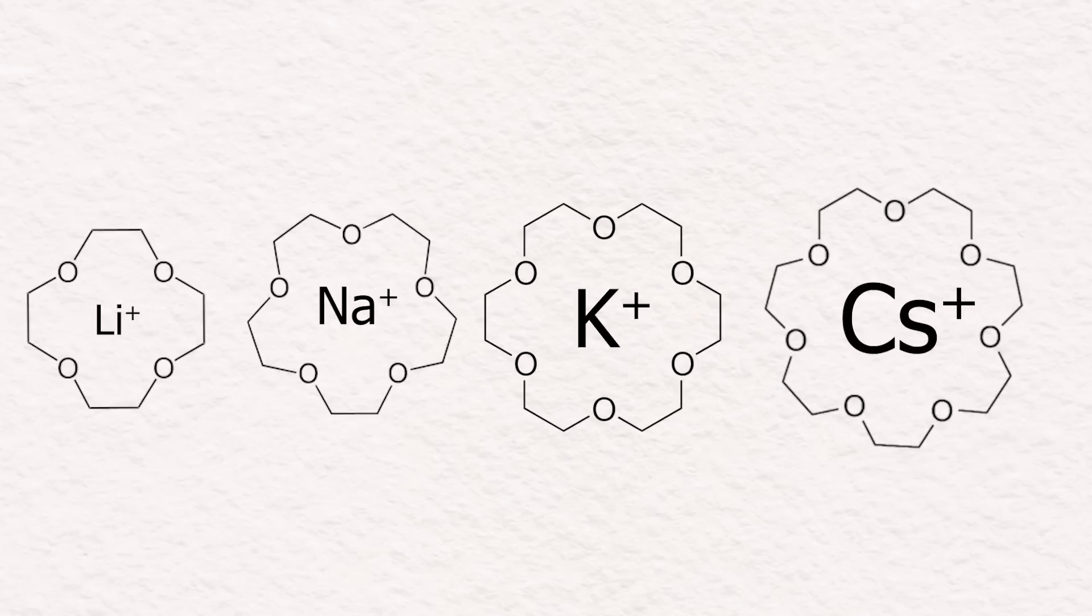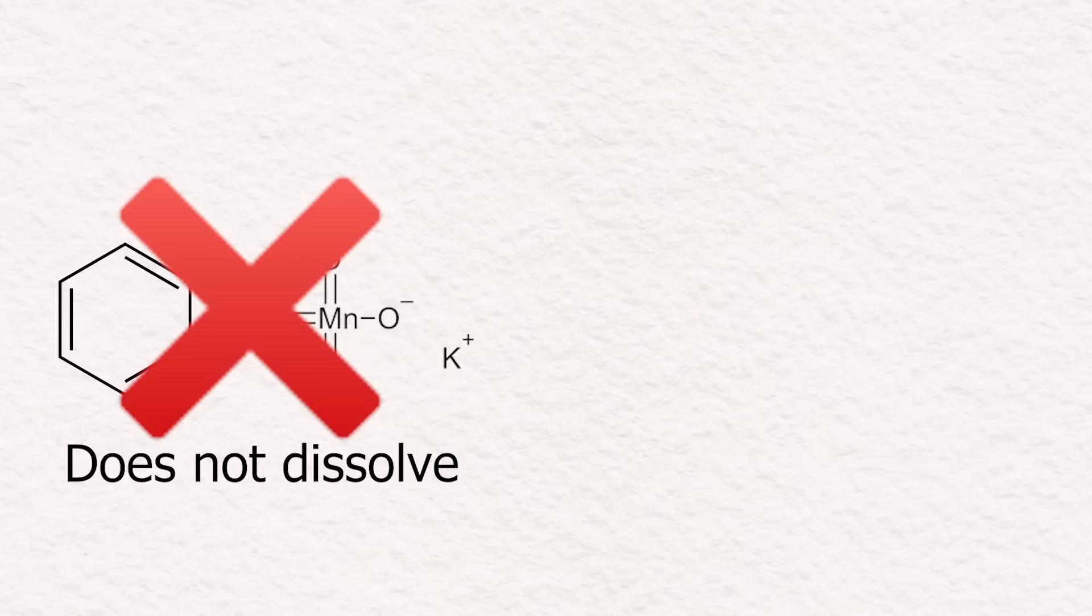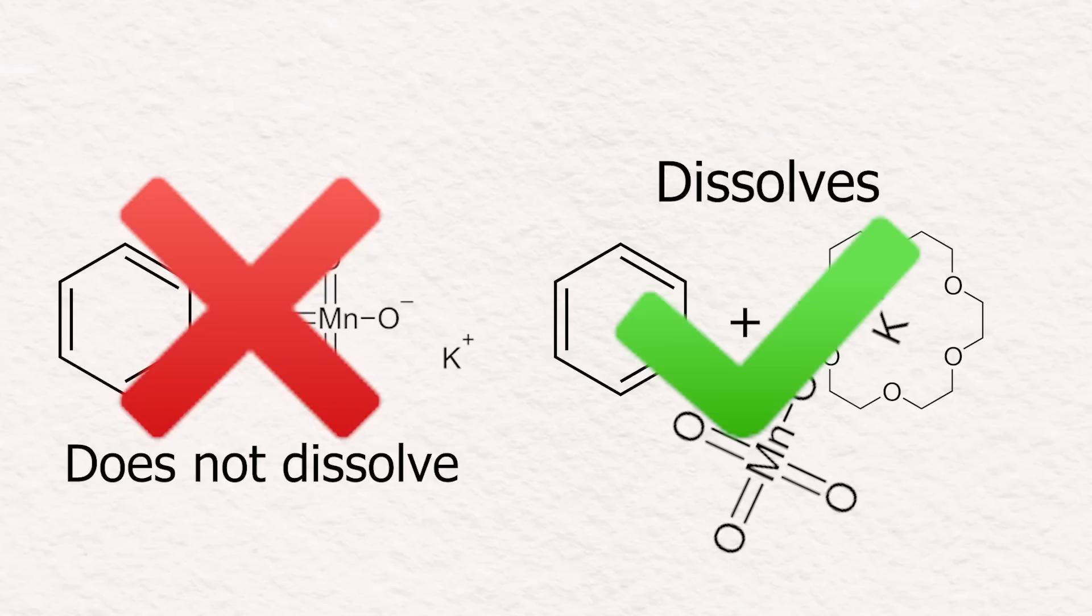Since crown ethers can dissolve in organic solvents, they can dissolve alkali salts with them that normally wouldn't dissolve. So for example, if we add potassium permanganate to benzene, nothing happens and it won't dissolve. But if we first dissolve some 18-crown-6 into the benzene and then add potassium permanganate, it will dissolve.